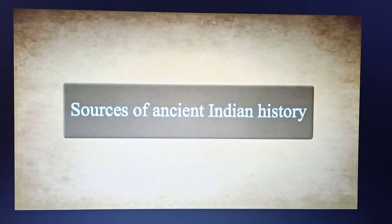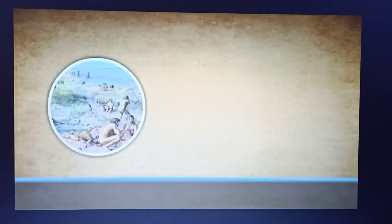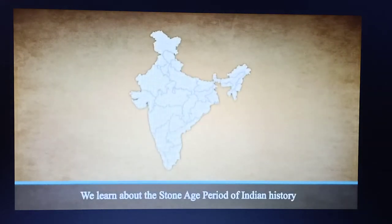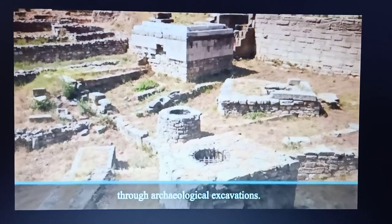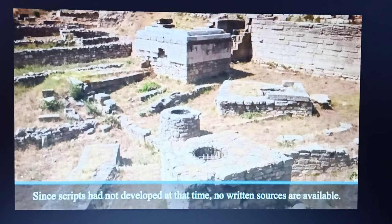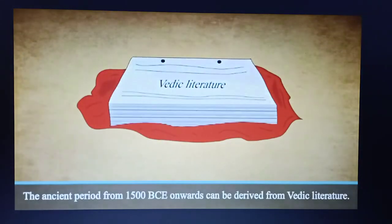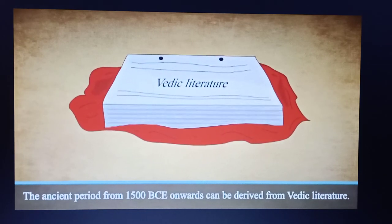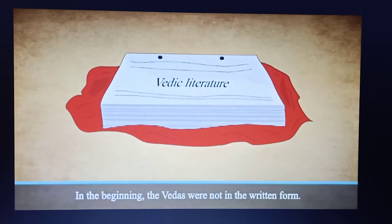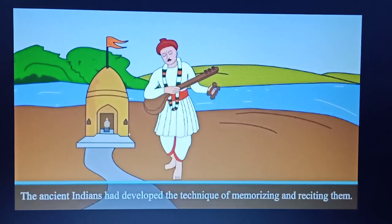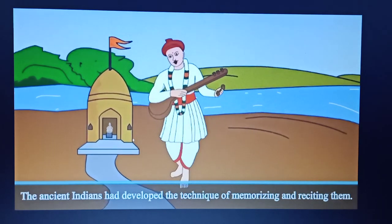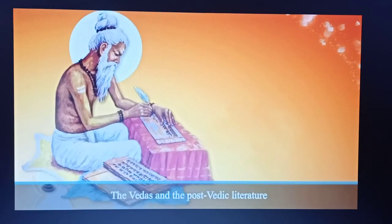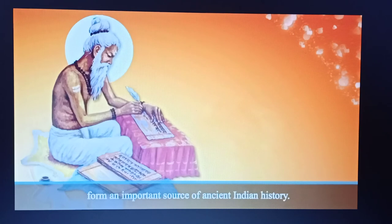Sources of Ancient Indian History: The ancient period of Indian history extends from the Stone Age to the 8th century CE. We learn about the Stone Age period through archaeological excavations. Since scripts had not developed at that time, no written sources are available. However, information about the ancient period from 1500 BCE onwards can be derived from Vedic literature. In the beginning, the Vedas were not in written form — ancient Indians had developed the technique of memorizing and reciting them. The Vedas were written down later on.